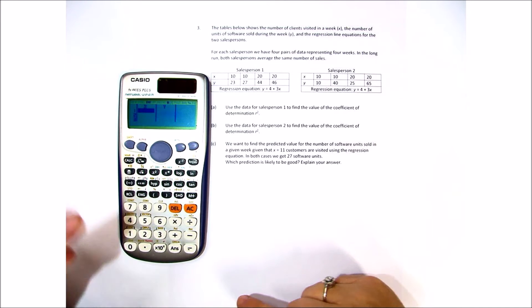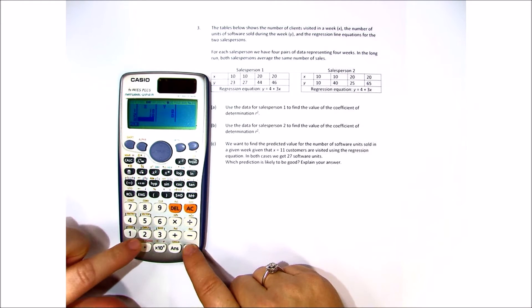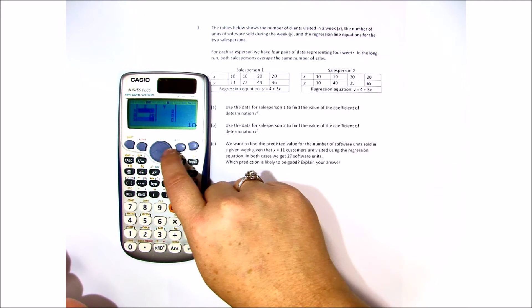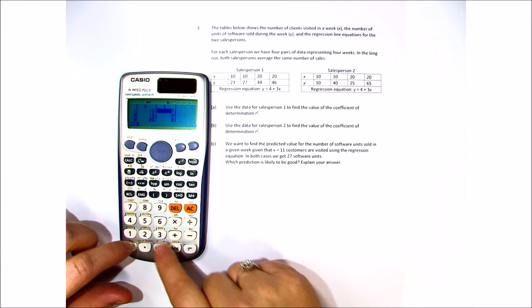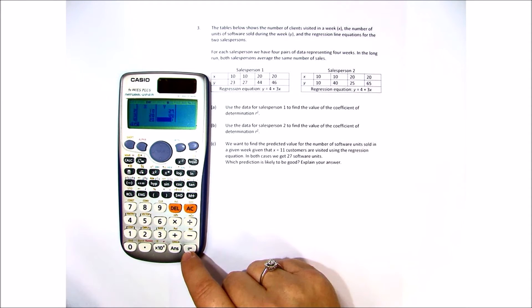So we have x and y. So I'm going to do 10, 10, 20, 20 and then for my y value 23, 27, 44 and 46.